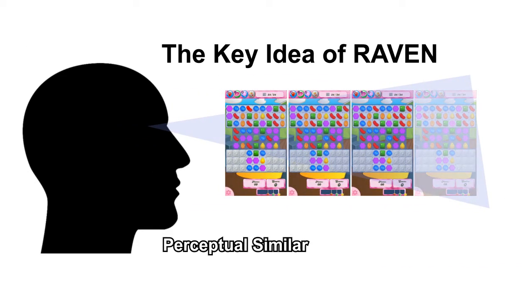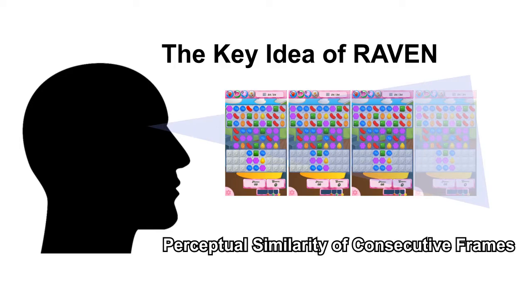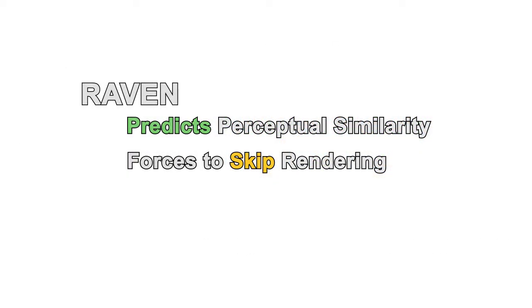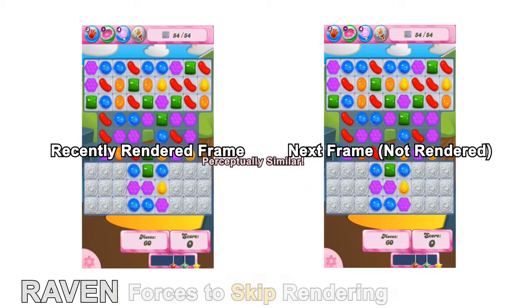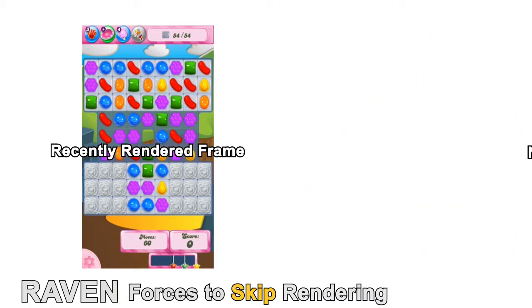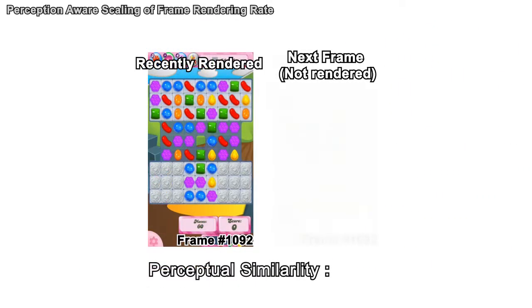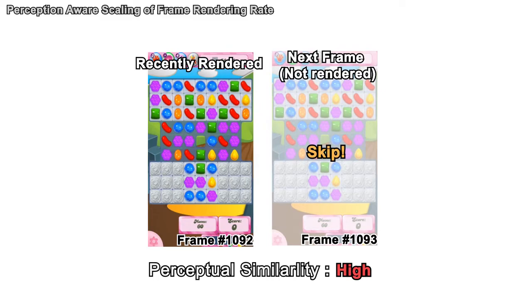Laban leverages perceptual similarity. Laban predicts and skips future frames. First, it predicts how the next frame would be perceptually similar to the current frame. If the prediction is similar enough, it skips rendering.